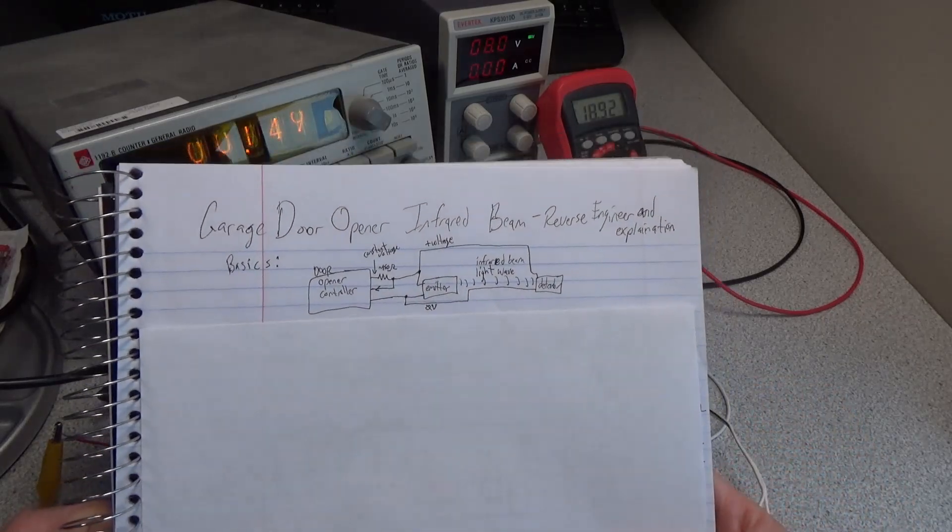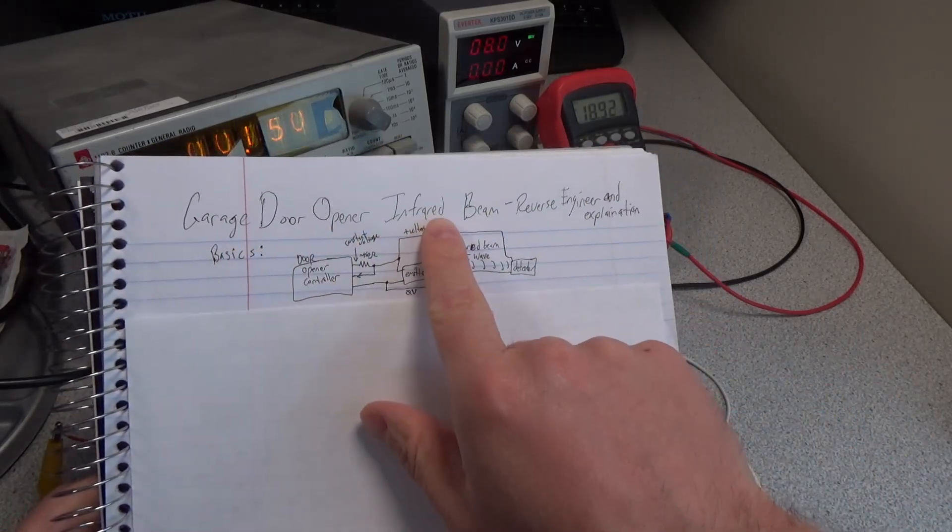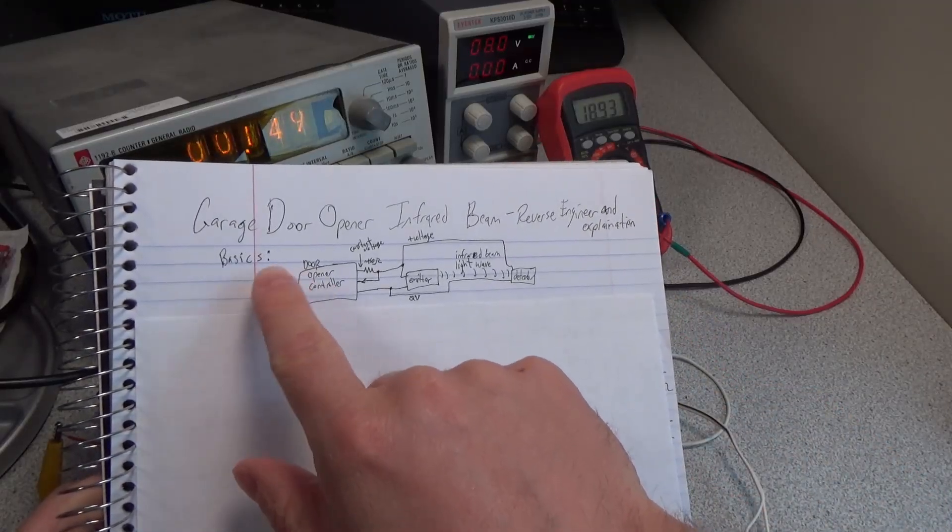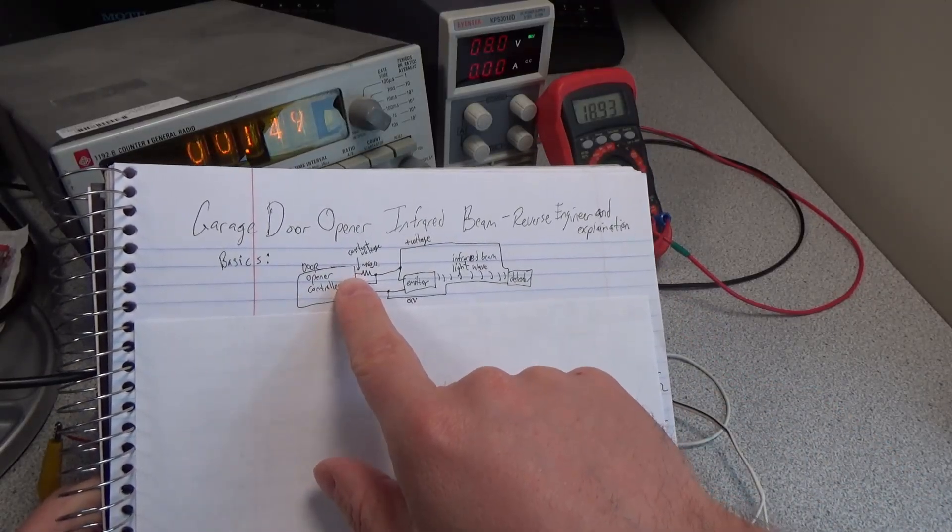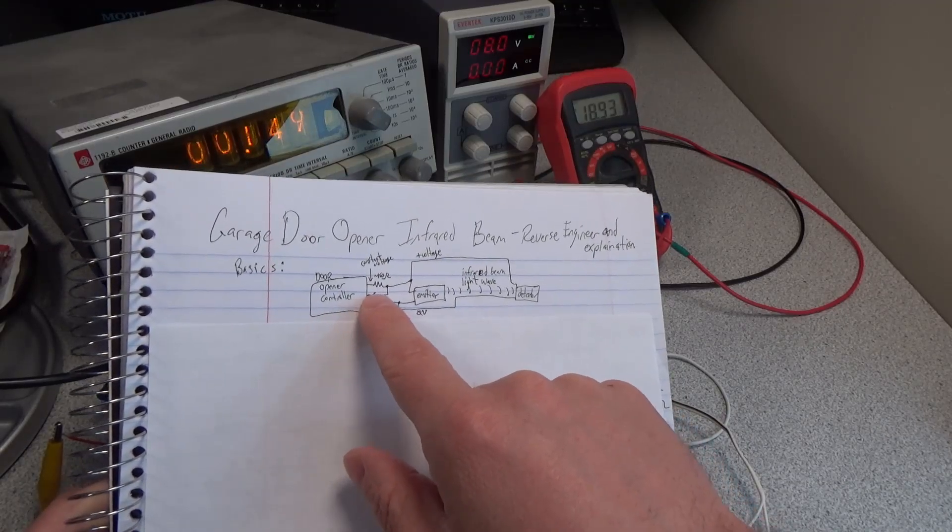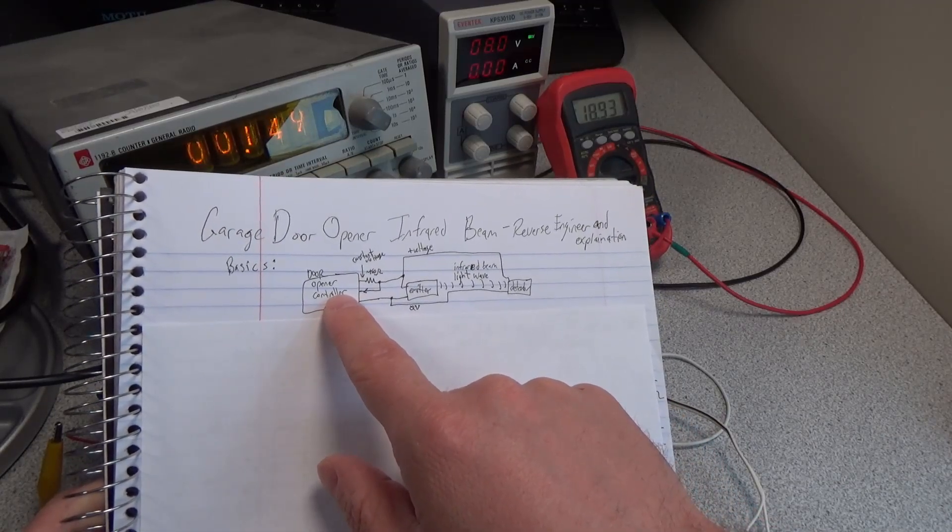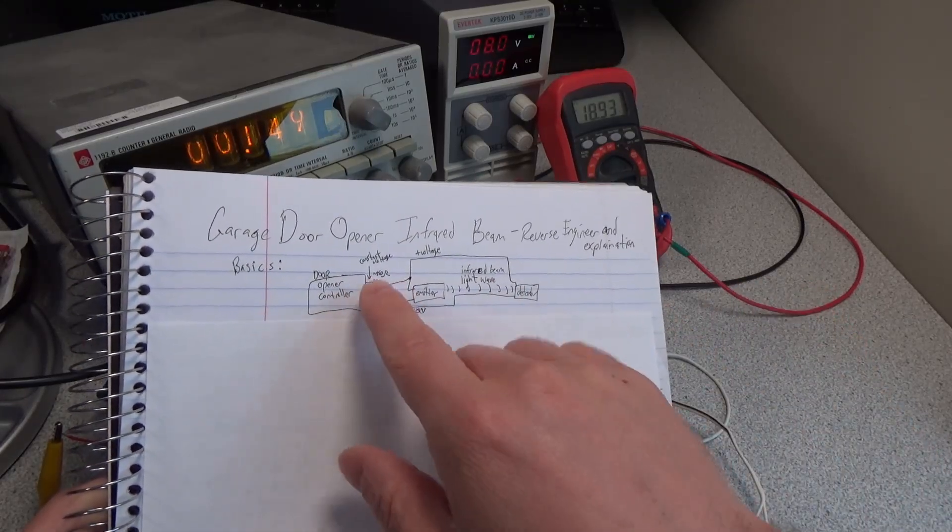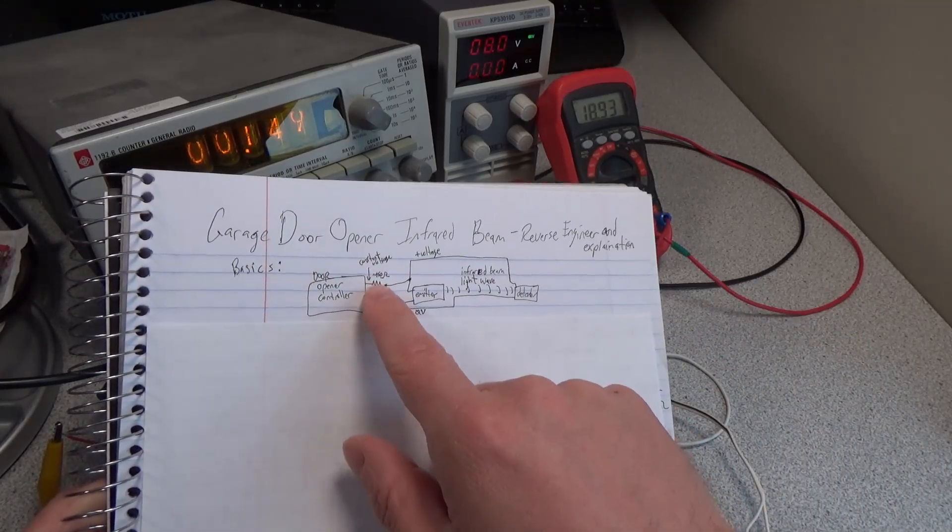Here are the basics of our garage door opener infrared beam reverse engineering. We have our opener controller with a constant voltage output. We have our resistor and a sensing line coming back in. It's sensing the voltage drop across that resistor, which changes based on how much current we're using.